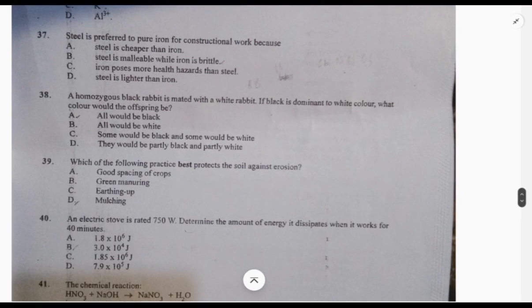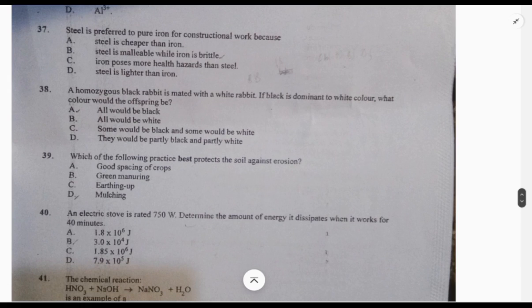38: a homozygous black rabbit is mated with a white rabbit. If black is dominant, what color would the offspring be? You know black is dominant, so no matter what, black would always dominate. So it's going to be black. 39: which of the following practices best protects the soil against erosion? Mulching.